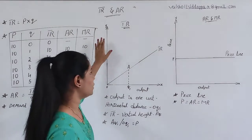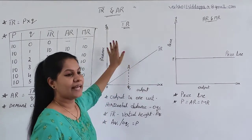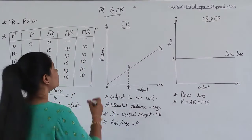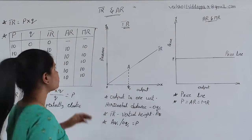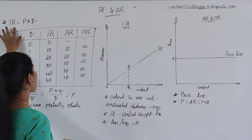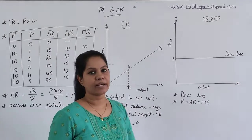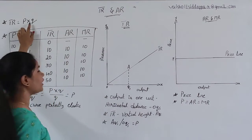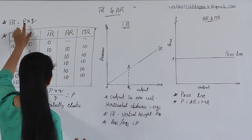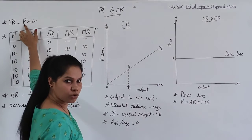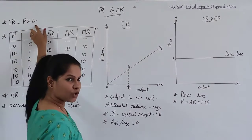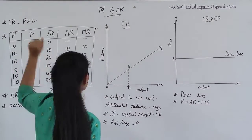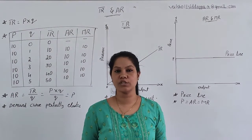Before talking about TR and AR, let me give you a few formulas. TR is nothing but total revenue. To find out the total revenue, the formula is P into Q — price of the particular good multiplied by the quantity we are producing, the total quantity. If you multiply these two, you are going to get TR which is total revenue.